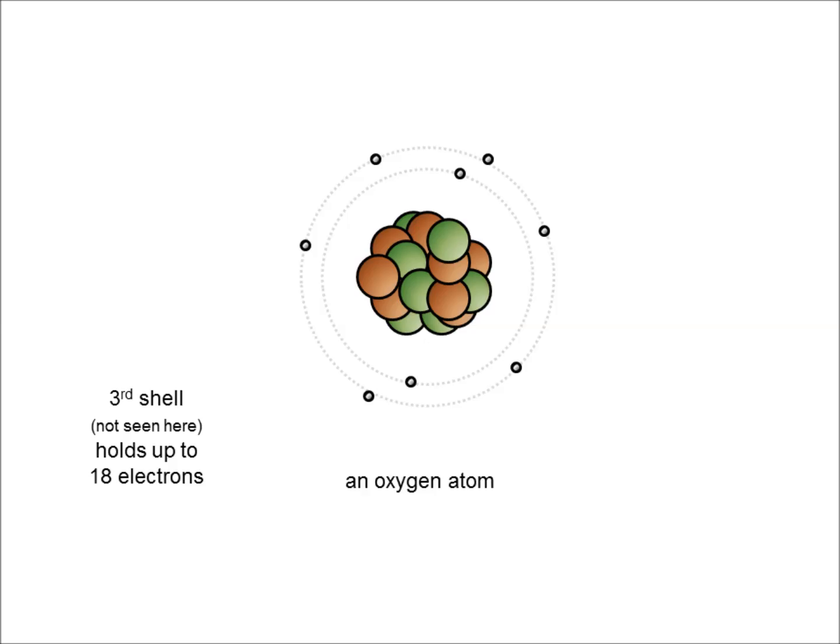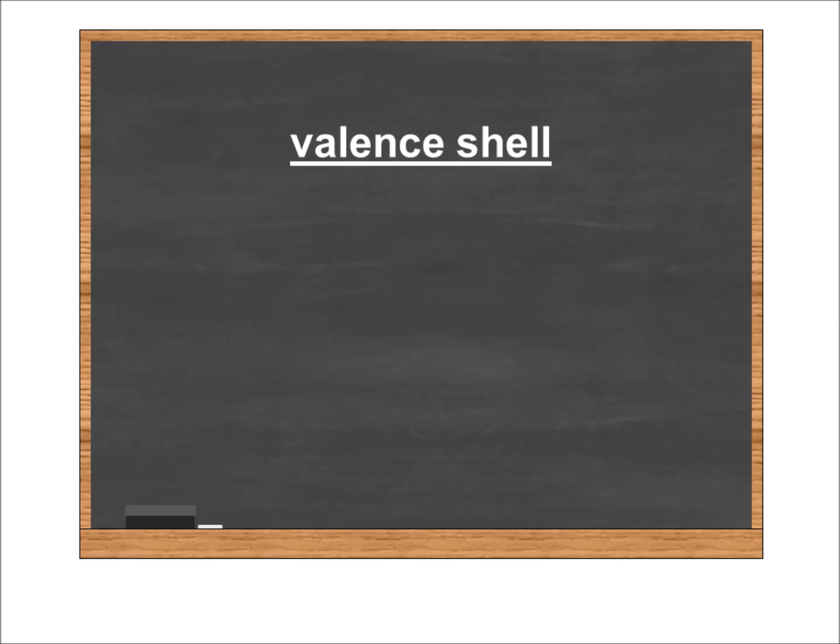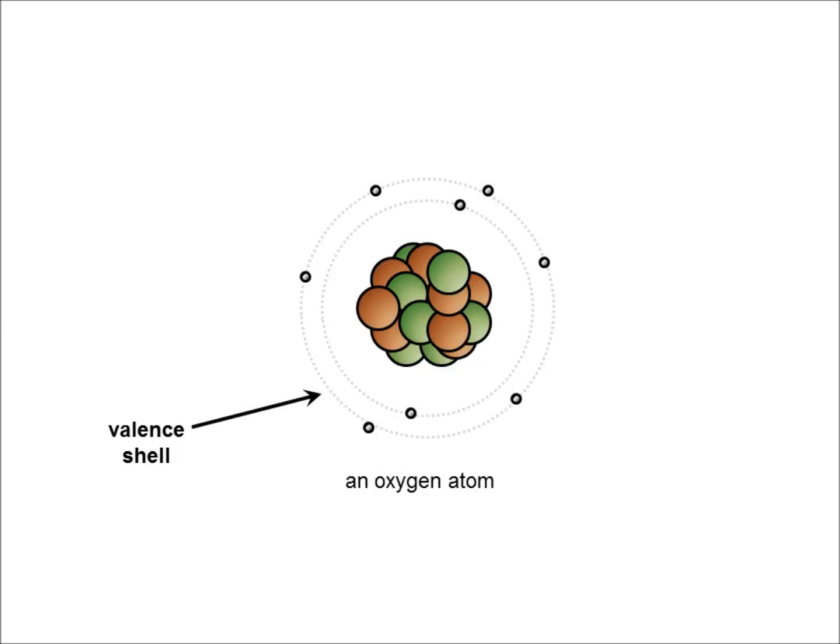The outermost of these shells is what's called the valence shell. So in any given atom, the valence shell is the outermost electron shell occupied by electrons. In our oxygen atom, the second shell happens to be the valence shell because it's the outermost shell with electrons.